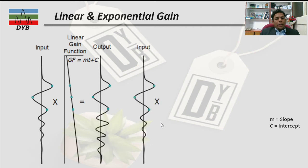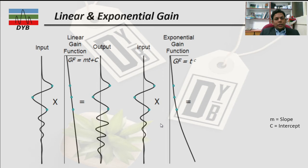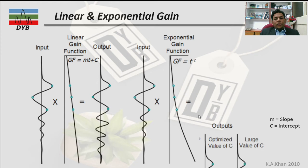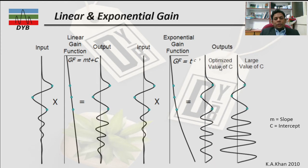Then there is the exponential type of gain. In exponential gain, you have control over how you want to enhance your amplitude. Near the top you need less amplification; once you go deeper, you need high amplification. After convolving the input with the gain function GF, you get the output trace. With an optimized value of C (the intercept), you achieve better amplitude in the deeper area as well.